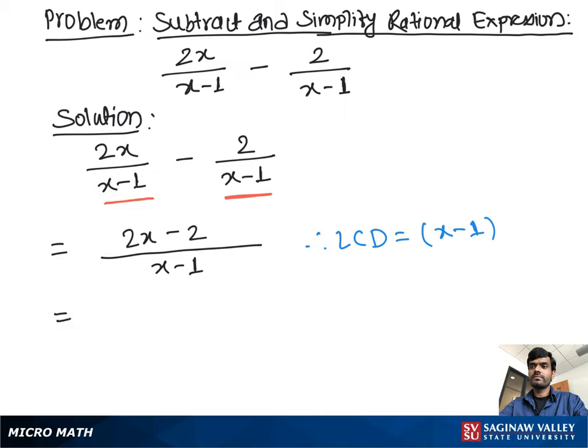Then you can write 2x minus 2 over x minus 1. Now do the factoring in the numerator, so we take a 2 and we have factor from x minus 1 over x minus 1. As you see, x minus 1, x minus 1 cancel out. We have left 2, and 2 is our final answer.